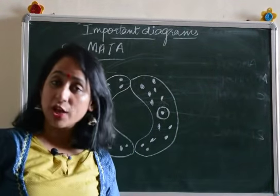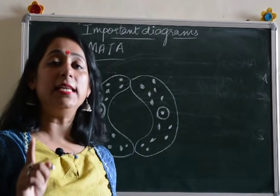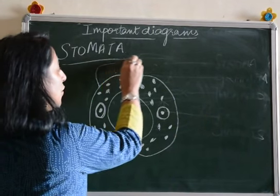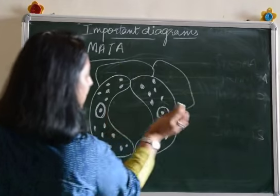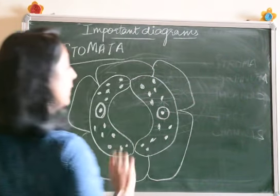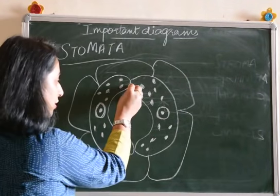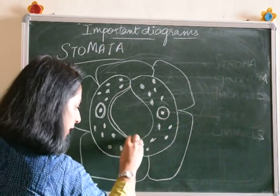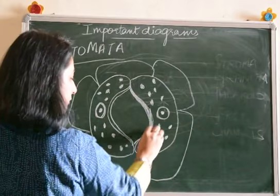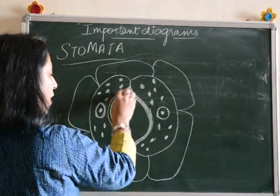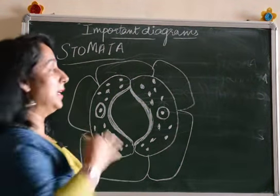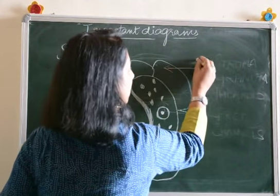There should be a demarcation between the nucleus and the chloroplast so the examiner knows both are present. If this diagram comes as a structural question you will never go wrong in the labeling part. We also have mesophyll cells or epidermal cells present around the stomata, which should be shown in the diagram — that gives a good impression. Then you should thicken the inner lining of the guard cell, because the inner lining is thick and the outer lining is slightly thin to absorb water.